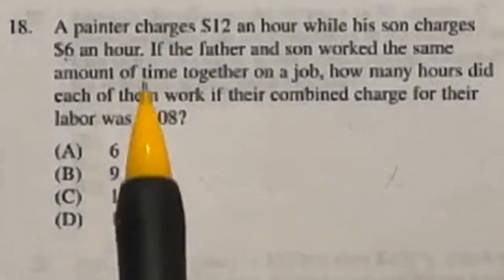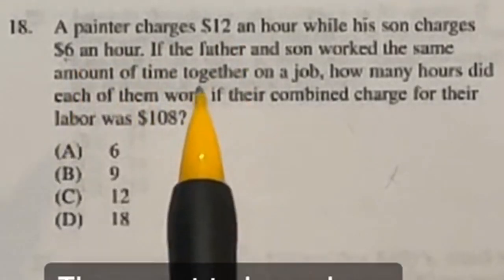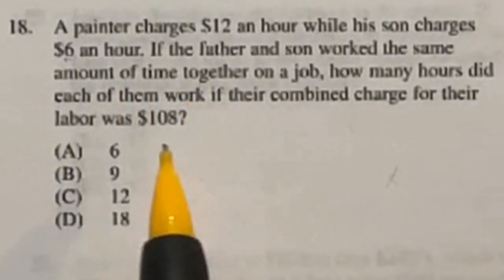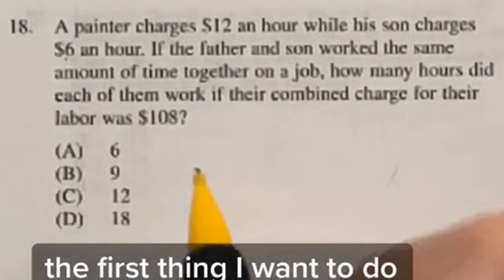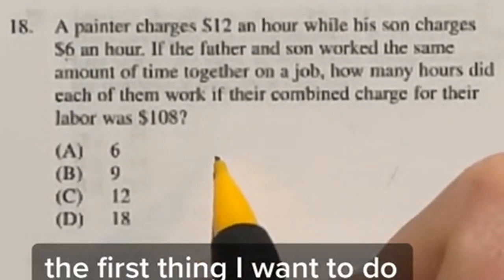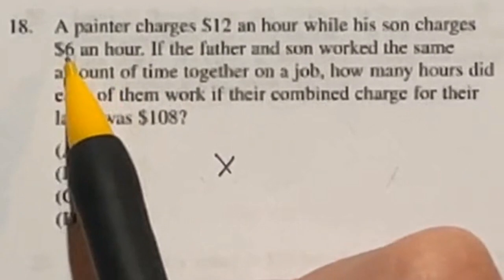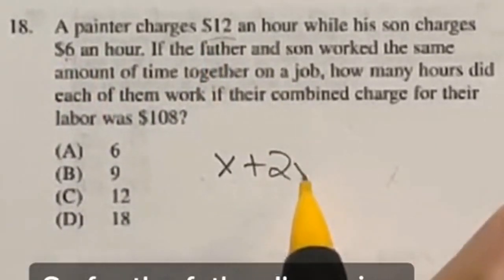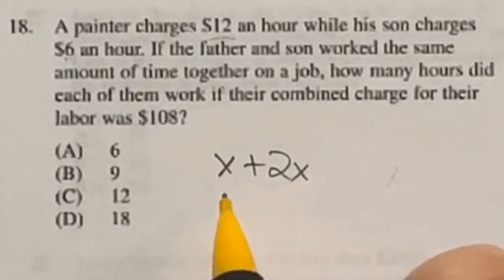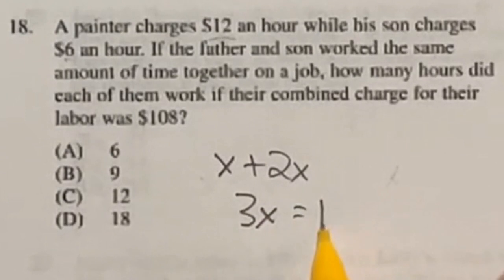So we got a father that charges $12 an hour, a son that charges $6 an hour. They want to know how many hours they work together if the total bill was $108. So looking at this, the first thing we're going to do is say that a son is working for X amount of hours. He's getting paid $6 for that, but this guy gets double that. So for the father, I'm going to add double that amount, which is going to be 2X here. So that's going to end up being a total of 3X, and that's going to be equal to that 108.